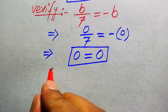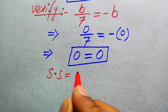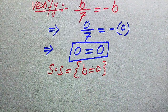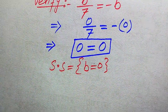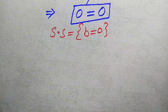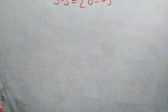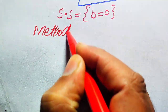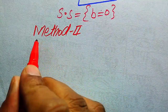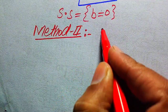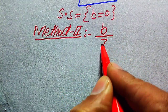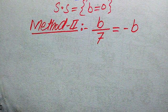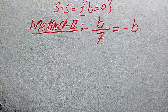This means b equals 0 is a solution of the given equation. We have only one solution, which is the trivial solution of the given equation. This is the final conclusion of the first method. Now we move towards the second method. We copy down the given equation: b divided by 7 equals minus b.